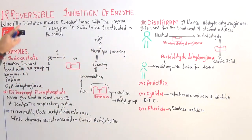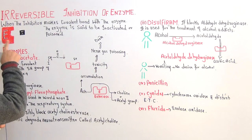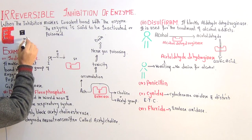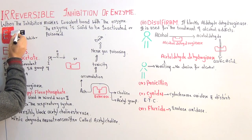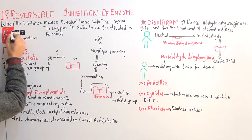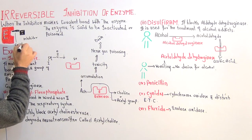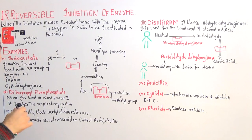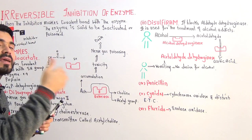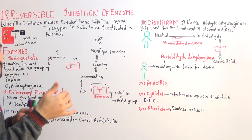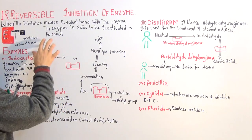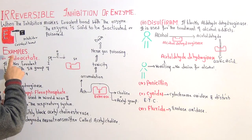Let's start irreversible enzyme inhibition. Here we have an enzyme, just like the previous lecture, and this time we have an inhibitor. What happens is that the inhibitor makes a bond, but this time the bond is very strong. This bond is called a covalent bond. Once the inhibitor is attached with the enzyme, this enzyme will be permanently deactivated — you can also say that the enzyme has been poisoned. You cannot break this bond again; you cannot make the process reversible.